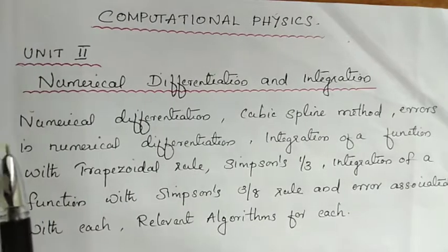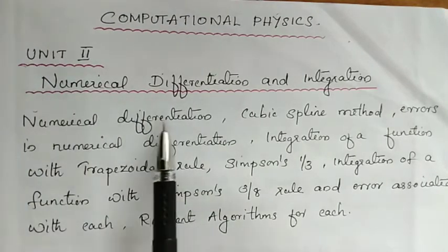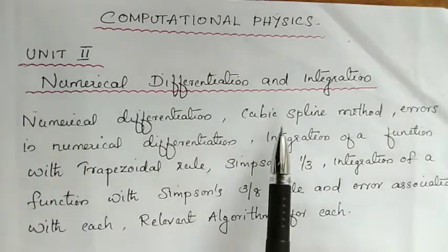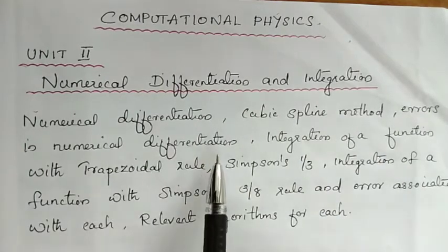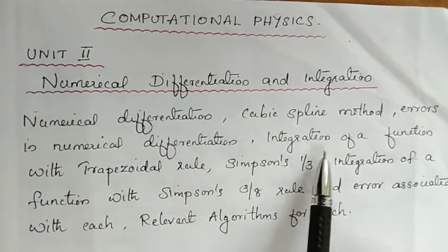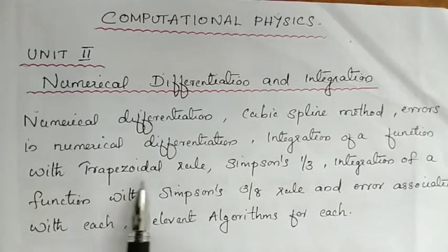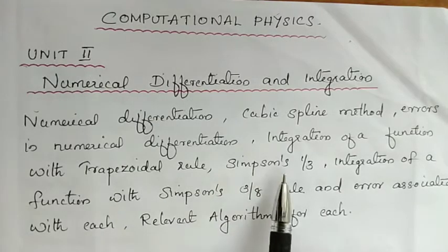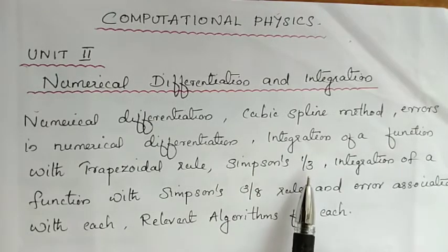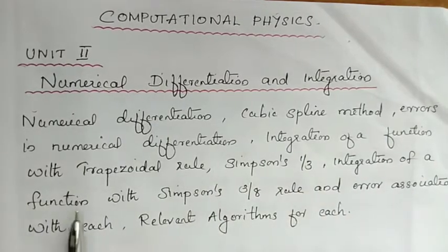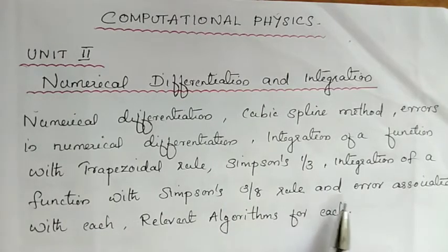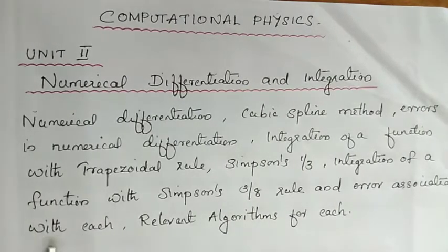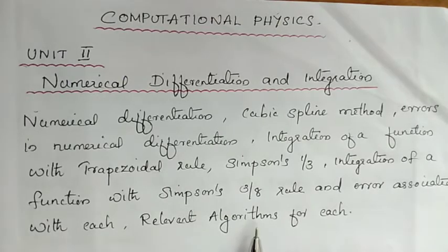The topics covered are: numerical differentiation, the methods to be explained, errors in numerical differentiation, integration of a function with the Trapezoidal Rule, Simpson's 1/3 rule, integration with Simpson's 3/8 rule, the error associated with each, and relevant algorithms for each.